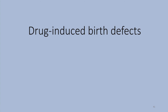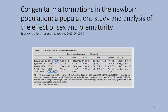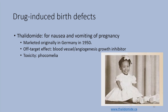A lot of the underlying issue about the lack of drug development for pregnancy-induced conditions is concern about drug-induced birth defects. At baseline in the United States, there is about a 3% congenital malformation rate. The first major disaster was thalidomide, developed for nausea and vomiting of pregnancy and marketed in Germany in 1950. Its off-target effect was angiogenesis inhibition and blood vessel growth inhibition, with toxicity of phocomelia — limb reduction defects. Animal studies showed no toxicity, yet human toxicity occurred.